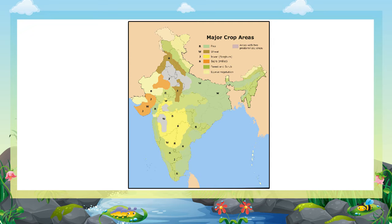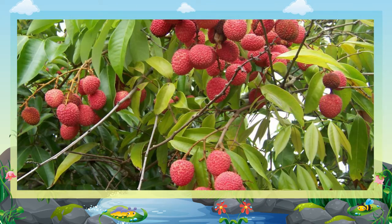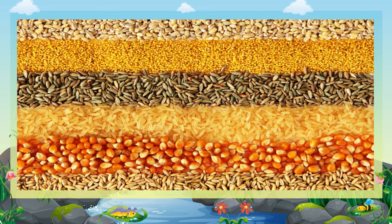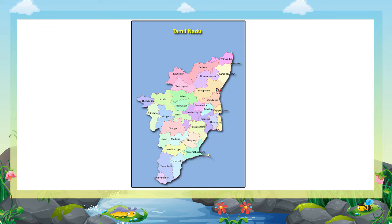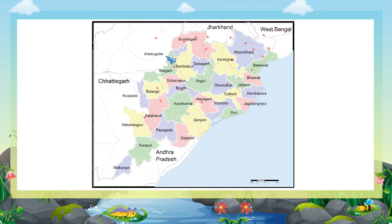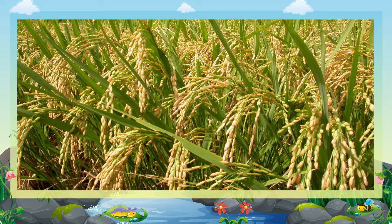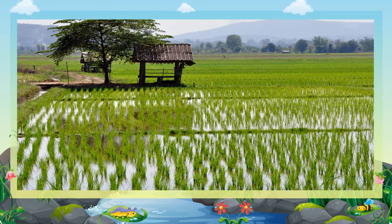The crops grown in India can be divided into four major groups: cereals, pulses, cash crops, and fruits. One: Cereals. Rice, wheat, maize, and millets are the chief cereals. Rice is grown in Assam, West Bengal, Andhra Pradesh, Tamil Nadu, Punjab, Haryana, Uttar Pradesh, Bihar, Odisha, Kerala, and Karnataka. Rice is the principal food crop in India and the staple food of millions. It grows well in a hot and wet climate.